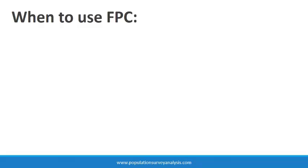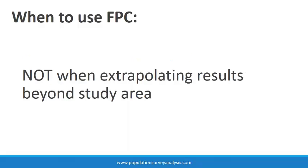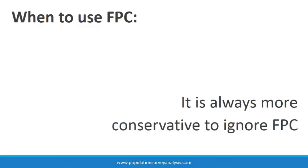We should downward adjust our variance estimates when we sample a sizable fraction of the population. This often happens in studies of a particular clinic or health catchment area. However, if you are trying to extrapolate results beyond your study area, the finite population correction factor is not appropriate. For example, if you study patients at three clinics across a province to extrapolate results to all patients in that province, the finite population correction factor would not be appropriate. It is only appropriate when your interpretation is limited to your study area. It is always more conservative to ignore the finite population correction factor in analysis, meaning your variance estimates will be wider and your interpretations about significant results will be more conservative.